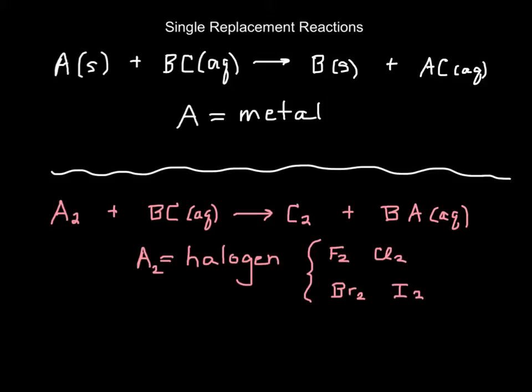One kind of reaction is called single replacement reactions. They're similar to double replacement, but instead you have a metal that reacts with some sort of ionic compound to produce a new metal and a new ionic compound. What happens is a metal comes in and kicks out the other metal. It replaces it, so A replaces B.